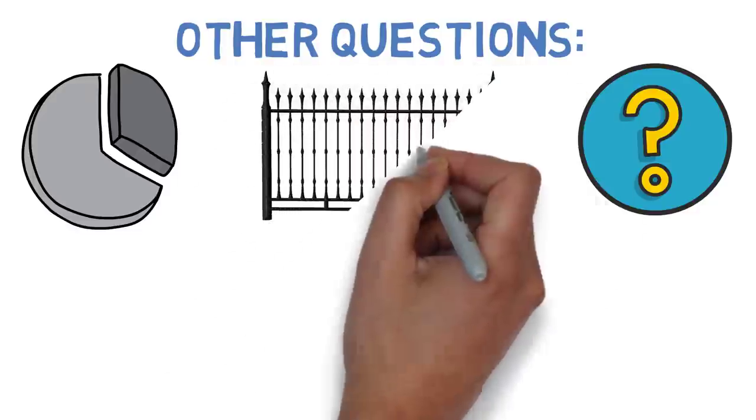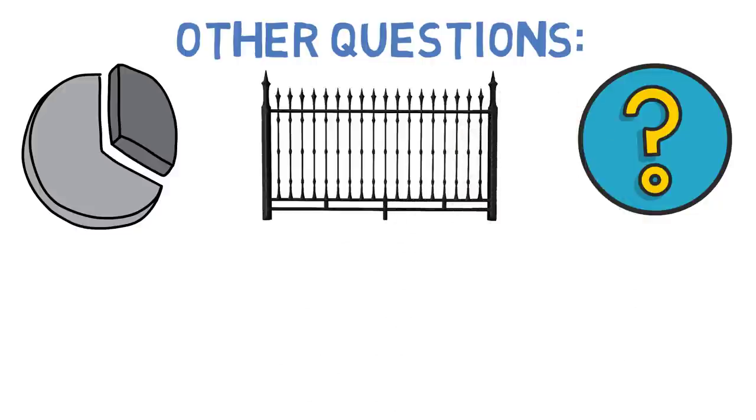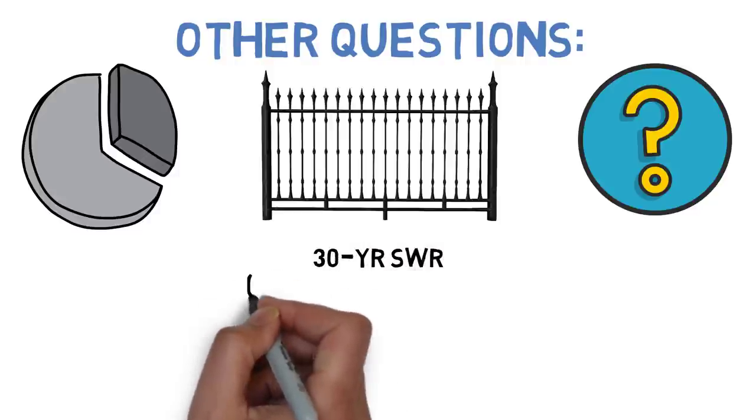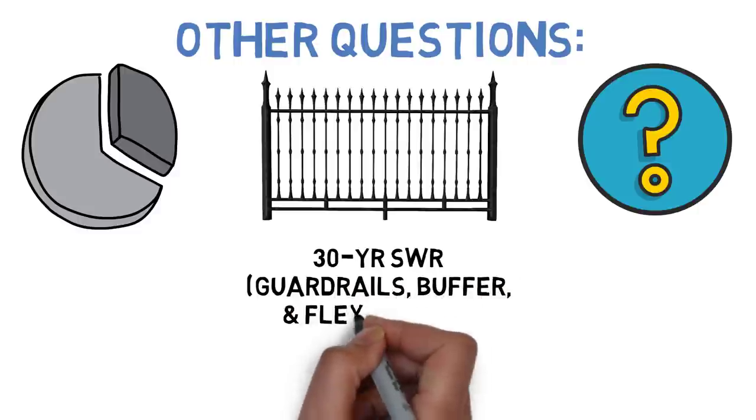and utilized financial guardrails to ensure that your withdrawals stayed within 20% above or below the initial safe withdrawal rate, adjusting your projected withdrawals by 10% any time they fell outside of those guardrails, and instituted a spending floor during normal years when the markets aren't down big of $30,000,